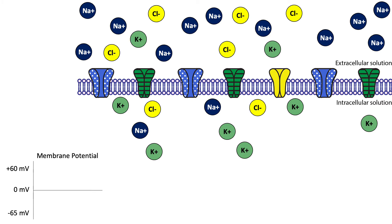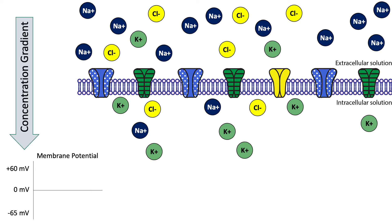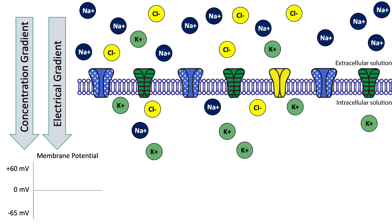Let's look at sodium in more detail. When sodium channels open, the neuron's membrane becomes permeable to sodium and sodium will begin to flow across the membrane. The direction is dependent upon the electrochemical gradients. The concentration of sodium in the extracellular solution is about 10 times higher than the intracellular solution, so there is a concentration gradient driving sodium into the cell. Additionally, at rest, the inside of the neuron is more negative than the outside, so there is also an electrical gradient driving sodium into the cell.